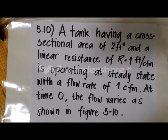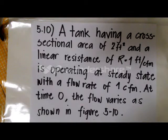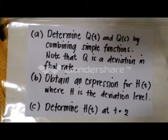A tank having a cross-sectional area of 2 feet squared and a linear resistance R equal to 1 feet per cubic feet per minute is operating at steady state with a flow rate of 1 cubic feet per minute. At time 0, the flow varies as shown in figure 5.10. We are tasked to determine Q(t) and Q(s) by combining simple functions, noting that Q is the deviation in flow rate.